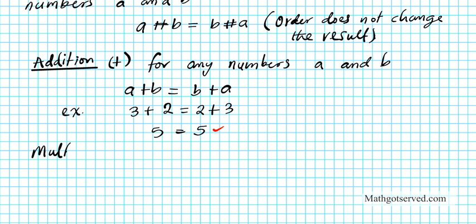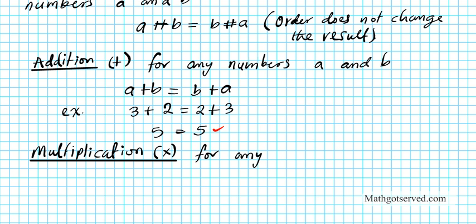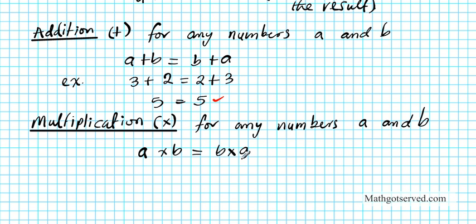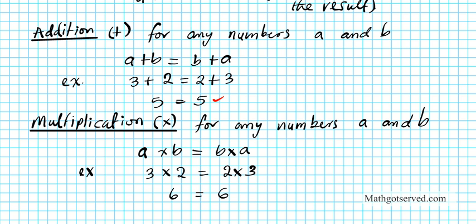Multiplication is also commutative. That means for any numbers a and b, a multiplied by b equals b multiplied by a — the order with which you multiply them does not matter. For example, three times two is six, and two times three is also six. So the order did not affect the result of the operation.